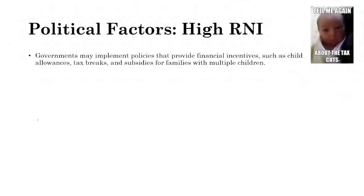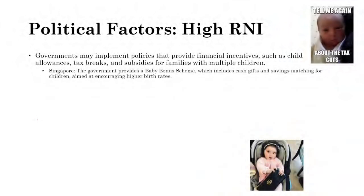Political factors creating high population growth include: governments implementing financial incentives like child allowances, tax breaks, and subsidies for families with multiple children. In Singapore, a baby bonus scheme provides actual cash, gifts, and savings for children, aimed at encouraging higher birth rates and giving families a financial foundation.